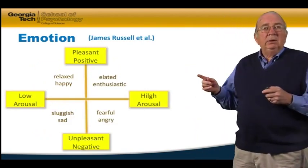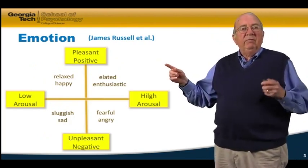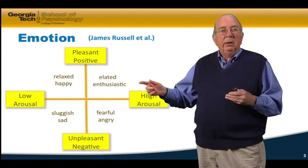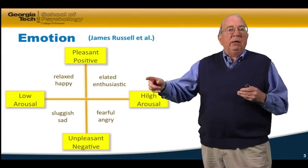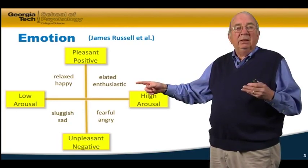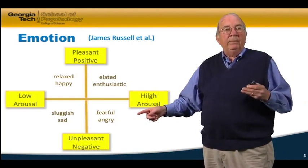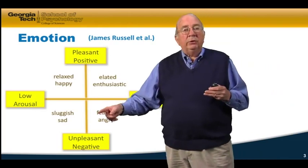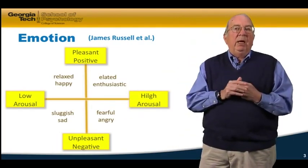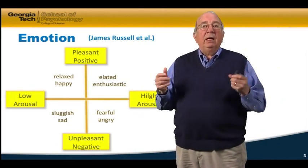For example, James Russell and his colleagues classified emotions along two different dimensions: valence — whether it's positive or negative — and arousal — whether it's low or high arousal. Positive low arousal would be things like relaxed and happy, and positive high arousal would be elated and enthusiastic. Negative high arousal would be fearful and angry, and low arousal and negative would be things like sluggish and sad. This is one attempt to categorize emotions by grouping them into two dimensions: positive or negative valence, and high or low arousal.